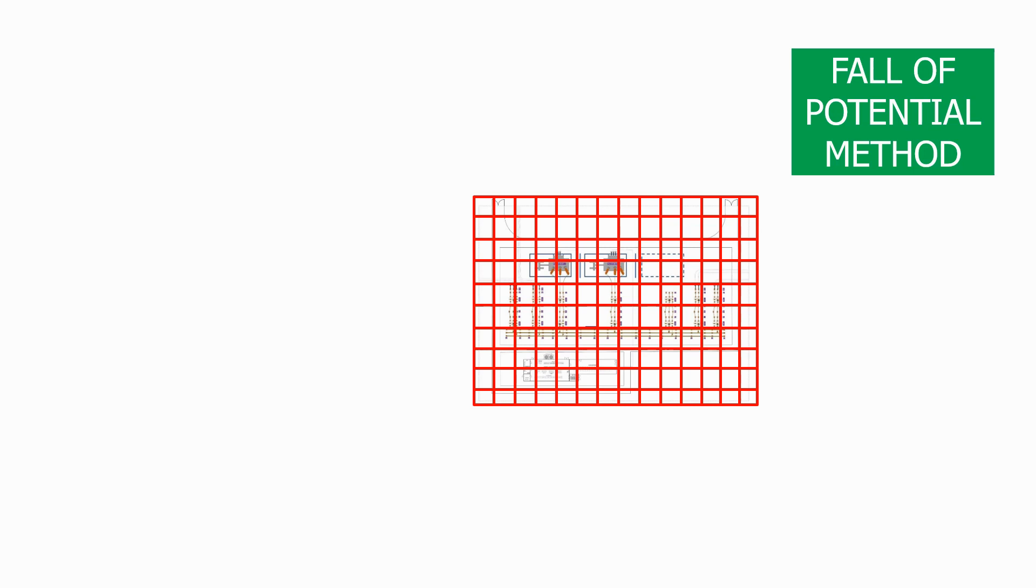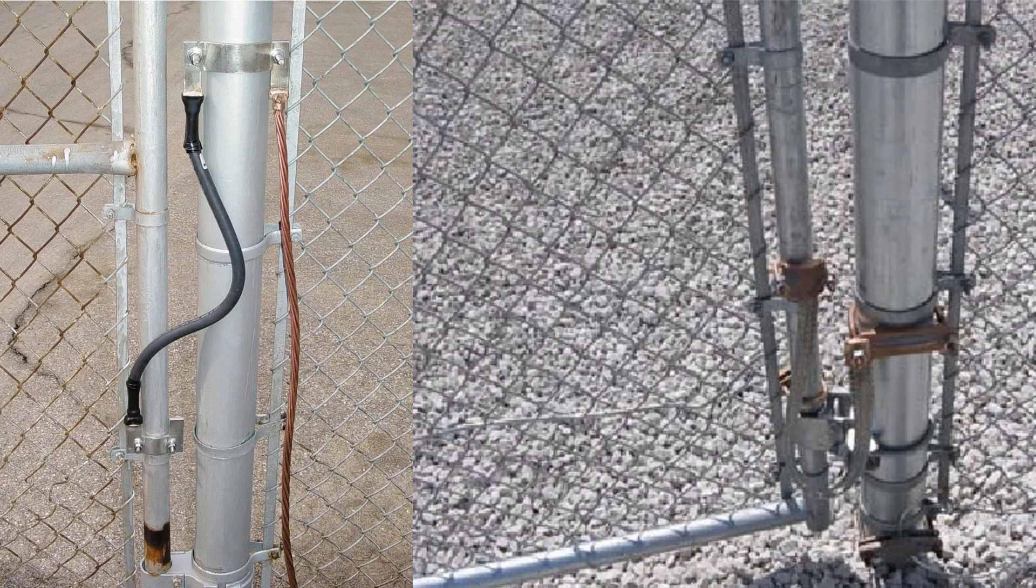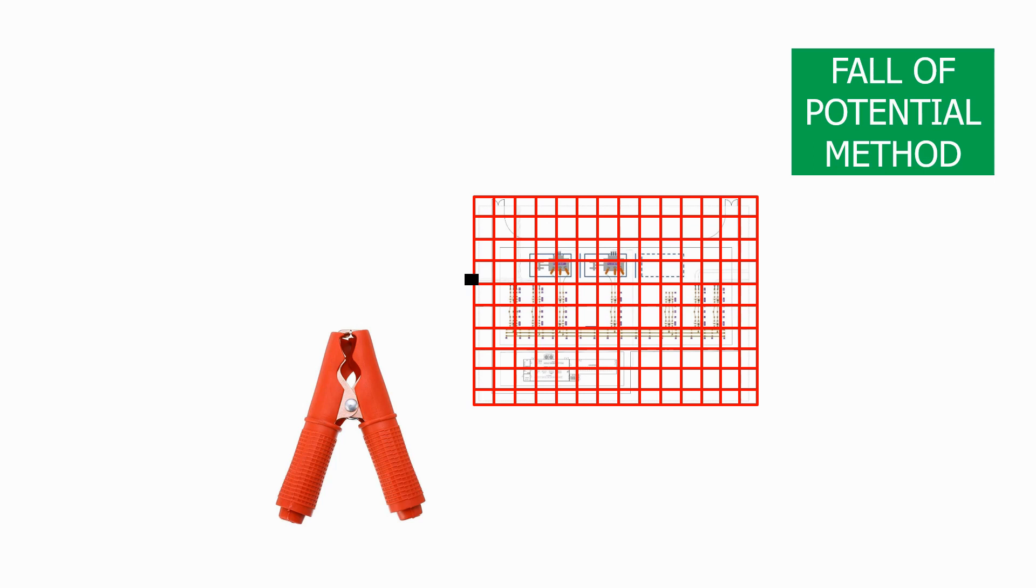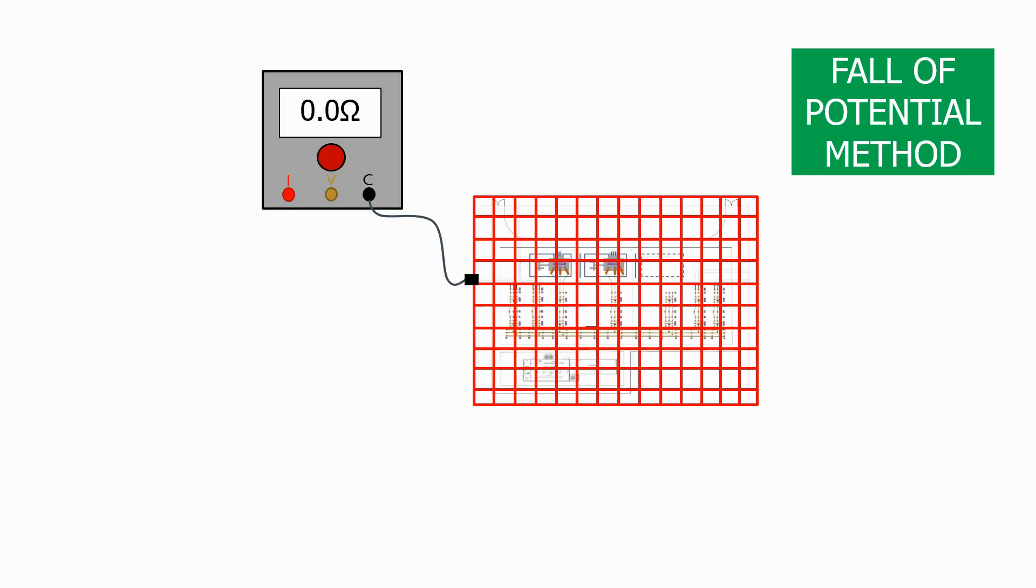In this methodology we connect a probe to the grid. The best location for this is the grounding connection on the substation fence, as long as it is directly connected to the main substation grounding grid. We then connect it to the common terminal of the resistance meter.